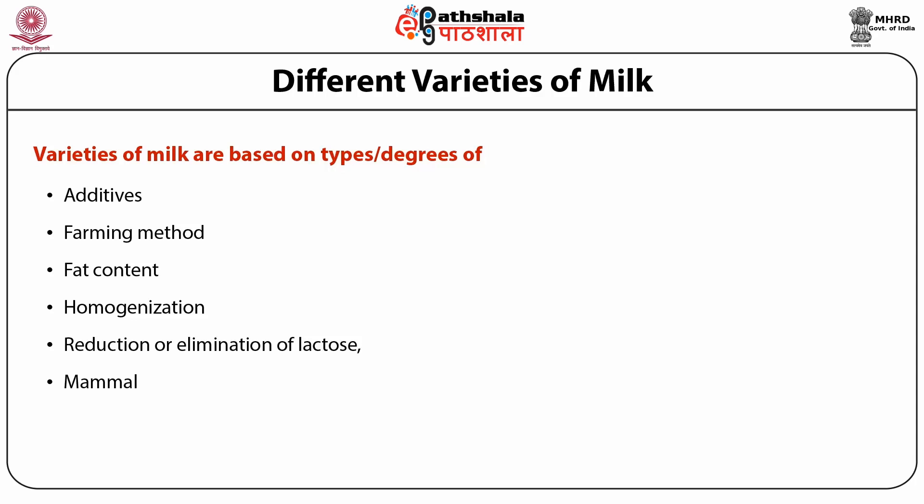The type of mammal of course decides the variety of milk. Milk of cow, buffalo, goat or sheep has different characteristics. You must have known about the milk of camel, which is very healthy, rich in lactose and has a sharp sweet taste. Milk is also varied as per type of heat treatment — we can have milk which is thermized, pasteurized, sterilized, ultra heat treated or filtered.